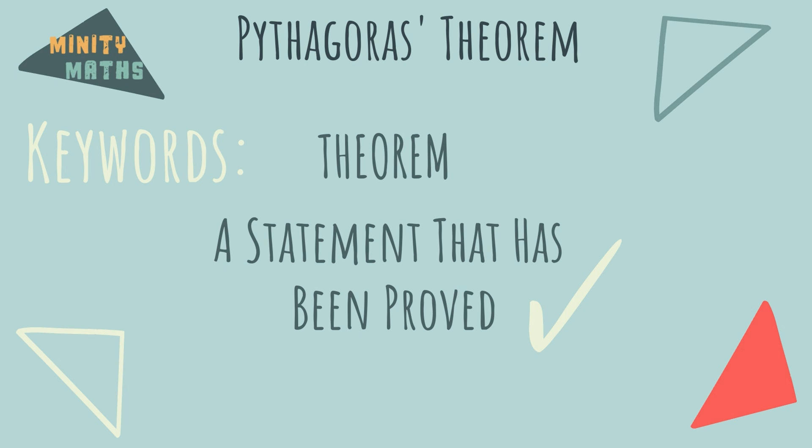So, Pythagoras has been credited with the discovery of a theorem about right-angled triangles. We can use this theorem to calculate the length of a missing side of a right-angled triangle.